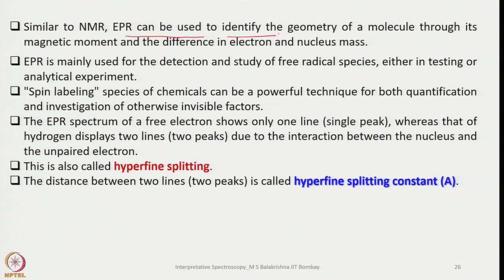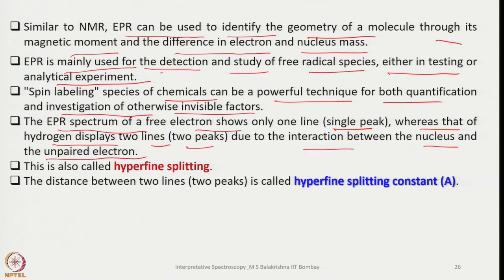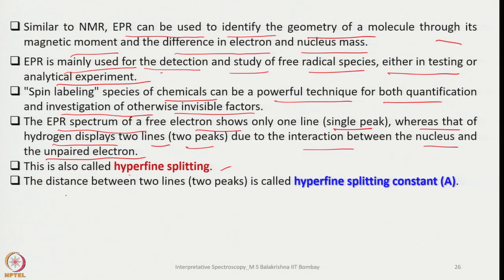Similar to NMR, EPR can be used to identify the geometry of a molecule through its magnetic moment, and EPR is mainly used for the detection and study of free radical species. Spin labeling of chemicals can be a powerful technique for quantification and investigation of otherwise invisible factors. The EPR spectrum of a free electron shows only one line, whereas that of hydrogen displays two lines due to the interaction between the nucleus and the unpaired electron — this is called hyperfine splitting. Electrons with spin plus half and minus half can also interact with nuclear spin, and the lines can be further split; in NMR we call this spin-spin coupling.